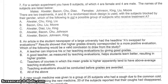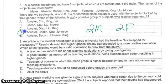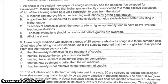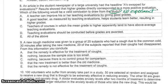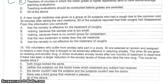Number seven: you cannot have more than two males and two females per group. Which group doesn't have two males and two females? That's D, so it can't be right. Number eight: results showed higher grades directly corresponded to more positive evaluations — no experiment, so that's correlation, not causation — answer C. Number nine: new cough medicine given to 25 people but there's no second group, nothing to compare. The best answer is C.